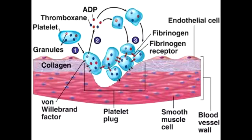What is Glanzmann thrombasthenia? Glanzmann thrombasthenia is the deficiency of glycoprotein 2B and 3A receptors. What is abciximab? Abciximab is a monoclonal antibody that inhibits glycoprotein 2B and 3A expression.